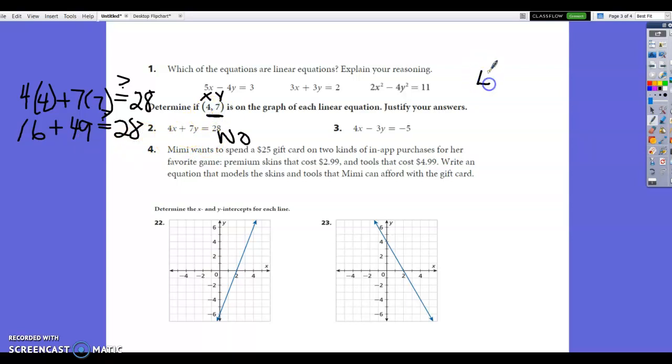So let's check number 3. So we've got 4 times x is 4 again. And minus 3 times y. y is 7. And does that equal negative 5? So we've got 4 times 4 minus 3 times 7. And we want to know, does that equal negative 5? Well, 16 minus 21 is negative 5. That means 4, 7 is a solution to number 3. So when you plug in the x and the y and the two sides are equal, the equation is equal, it is a solution. On this side, it was not equal. So it is not a solution.